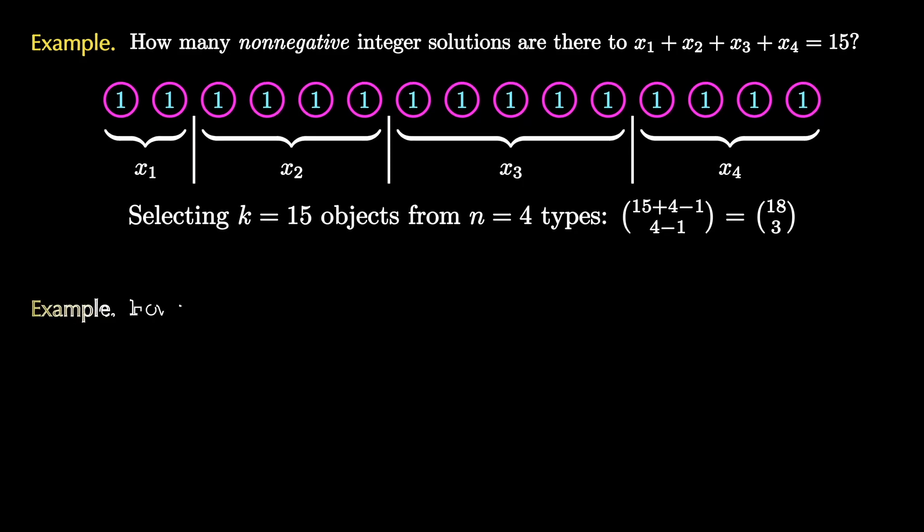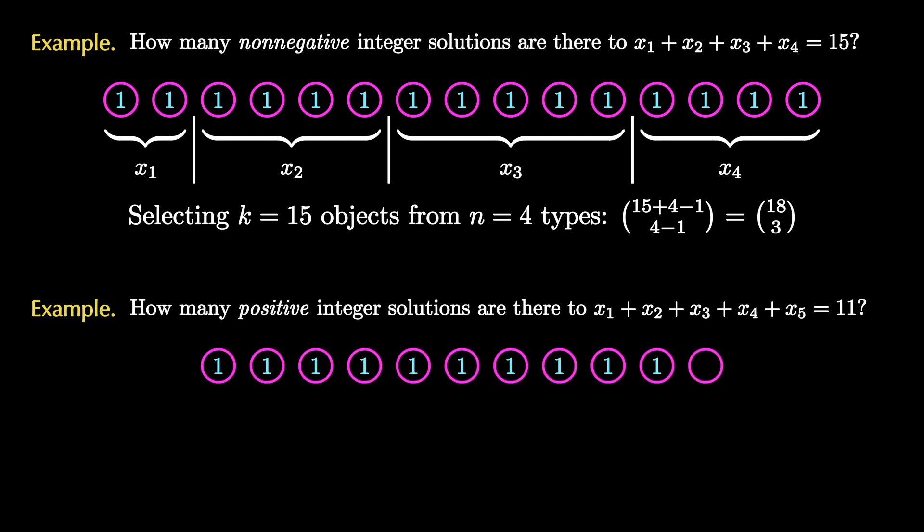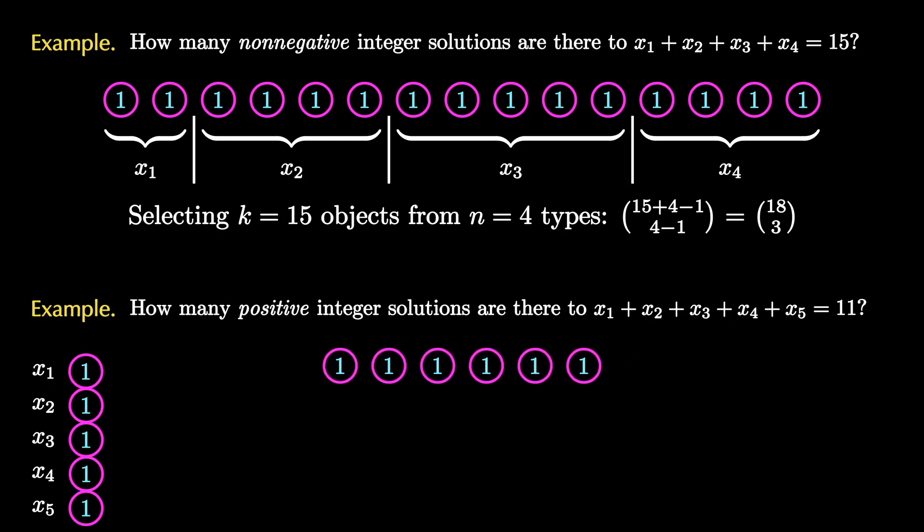Let's consider a related question. How many positive integer solutions are there to this equation? Again we can think of placing 11 one tokens but this time because we want positive solutions we need to give each variable one token to start like this. This leaves us with six remaining tokens and we have five boxes to place it in so we put four dividers down.